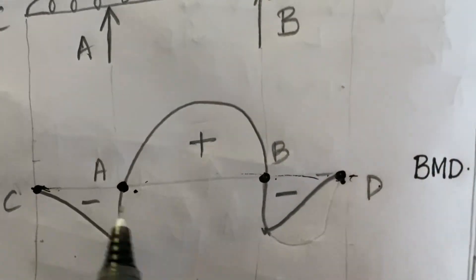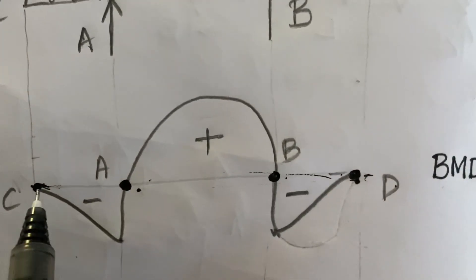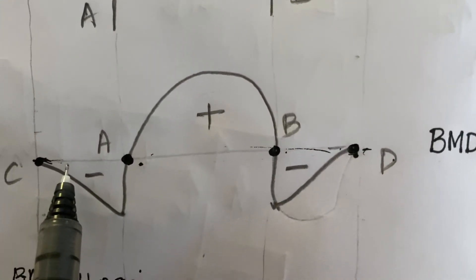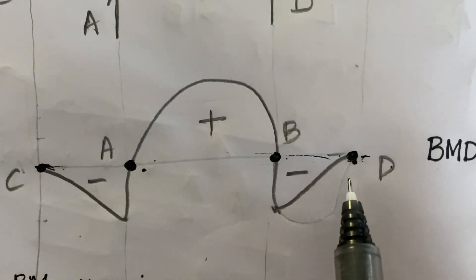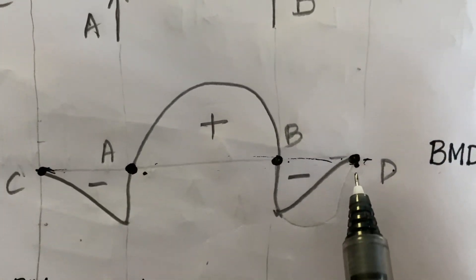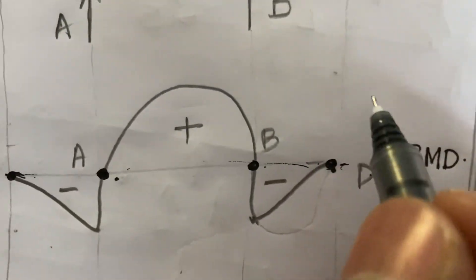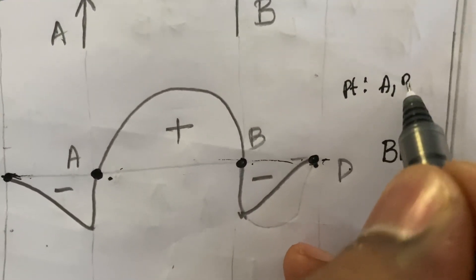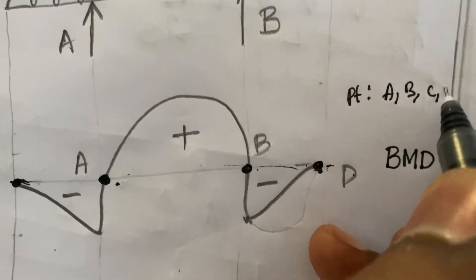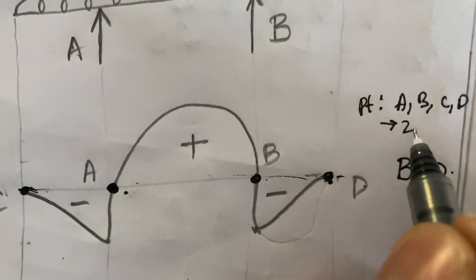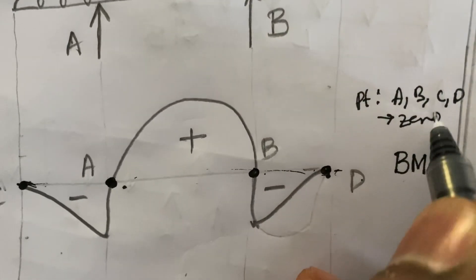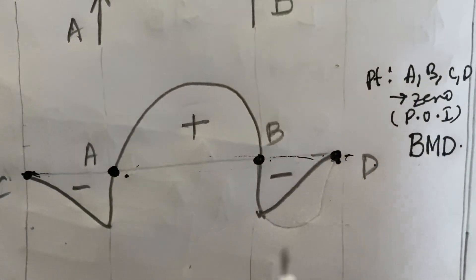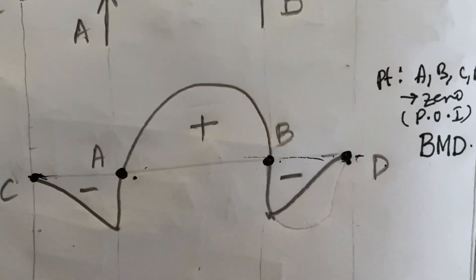It is reaching and touching zero at four different points. The bending moment is zero at those points — those points are nothing but the point of inflection. Points A, B, C, and D, where the bending moment reaches zero, are known as points of inflection as per the bending moment diagram.